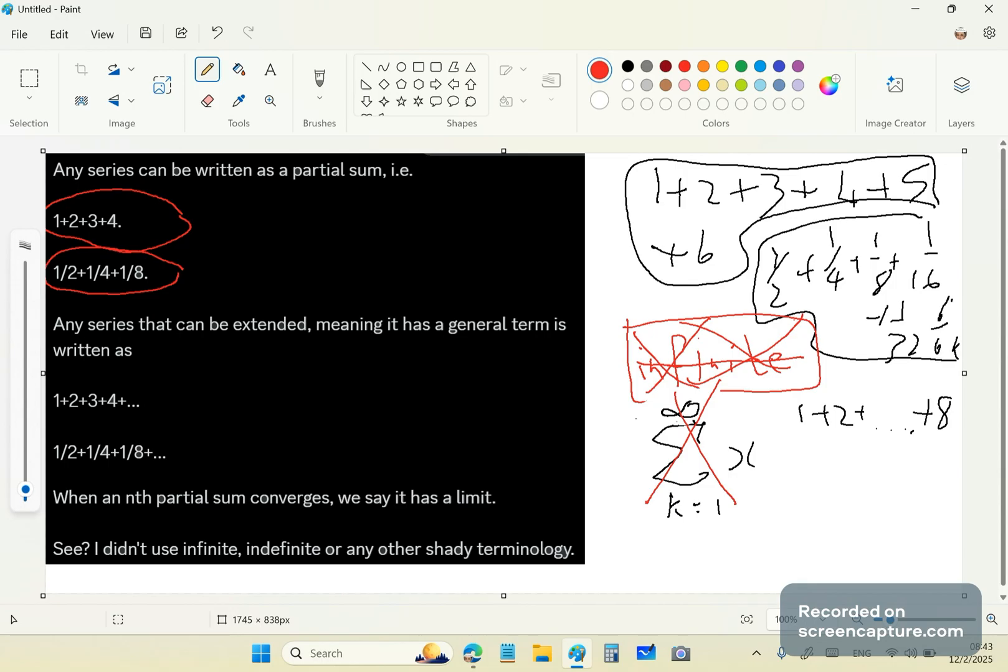So when a partial nth sum converges, it has a limit. For example, this series. When this converges, what is the limit? 1.